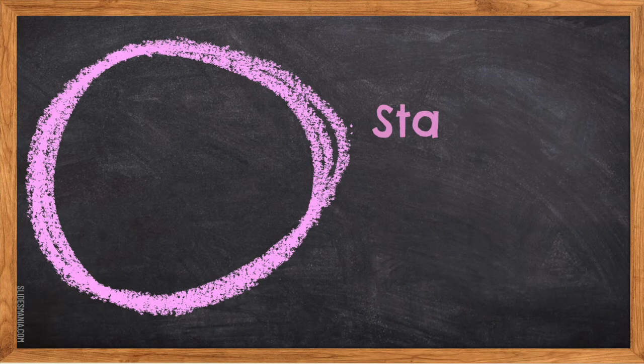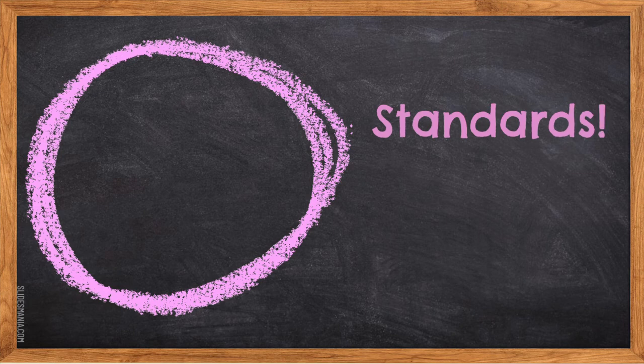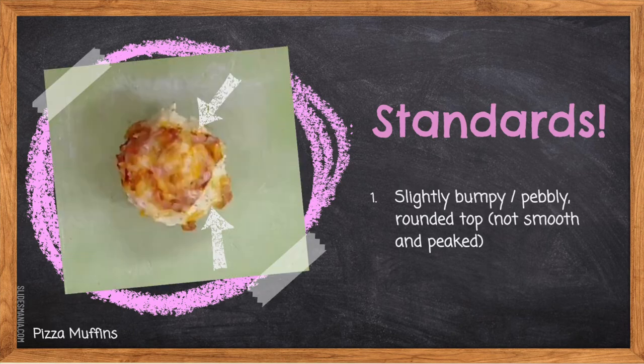Three — the sides of the muffin will shrink away from the muffin tin. Standards: one — a slightly bumpy, pebbly, round top and not smooth or peaked. This is caused by not over-mixing your dough and making sure that you mix until just moistened. If you over-mix, you will activate the gluten causing smooth tops.